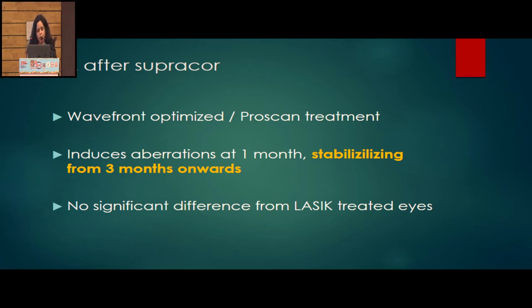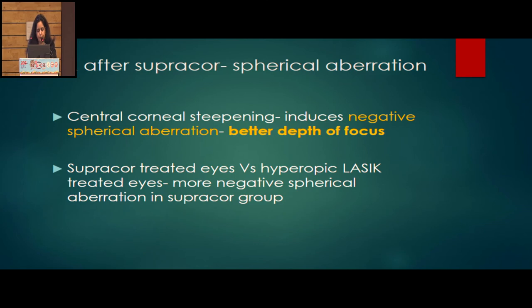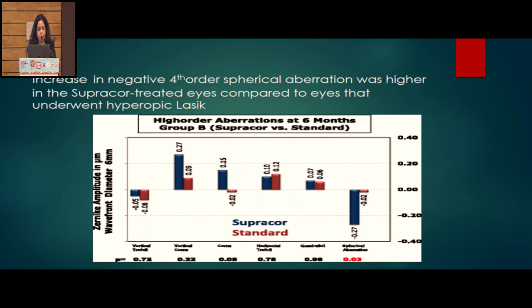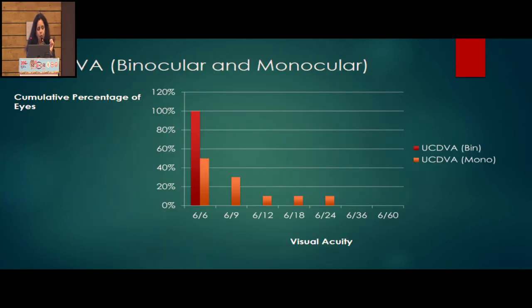The increased negative spherical aberrations at three months may actually benefit near vision, as spherical aberrations help extend depth of focus. SupraCore is a wavefront-optimized or ProScan treatment, not a wavefront-customized treatment, so it obviously induces some aberrations. What we found is that aberrations increase at one month but a stabilizing effect happens from three months onwards — no significant difference compared to other LASIK-treated eyes. Central corneal steepening induces negative spherical aberration, which helps depth of focus — similar to what happens in PresbyBond with controlled spherical aberrations.